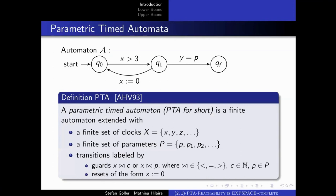A parametric timed automaton is an automaton extended with a finite set of clocks and parameters. Configurations are pairs of states of the automaton and clock assignments over discrete time. Transitions are labeled by two types of actions that manipulate clocks: you can compare them against constants or against parameters, and you can reset them to zero.